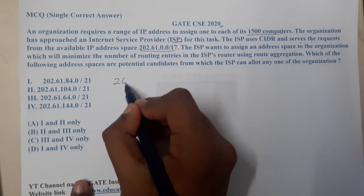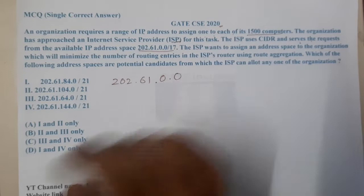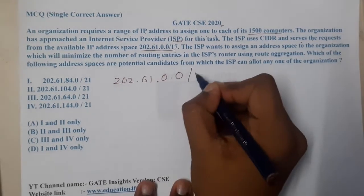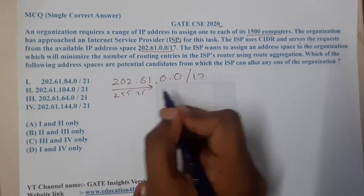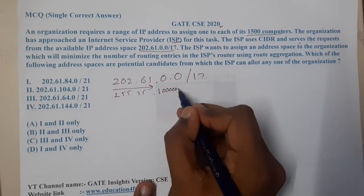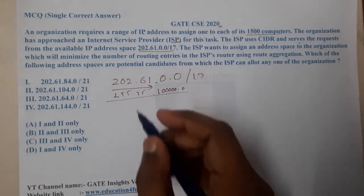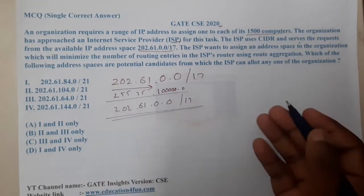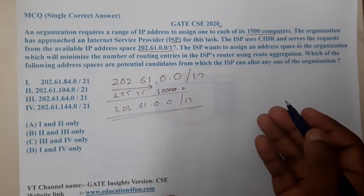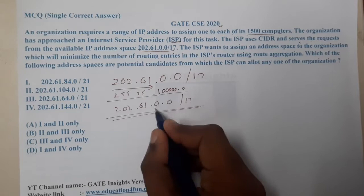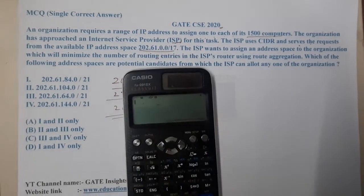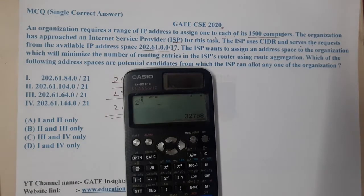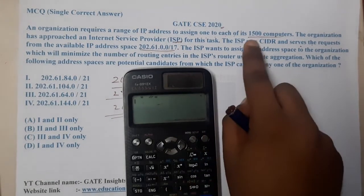The IP address the ISP has is 202.61.0.0/17. If you observe carefully, /17 means the first 17 bits are the network part — that is 255.255 with the first bit of the third octet as 1, rest zeros. So the initial network is 202.61.0.0/17. This gives 2^15 = 32,768 possible devices, but our requirement is only 1500.